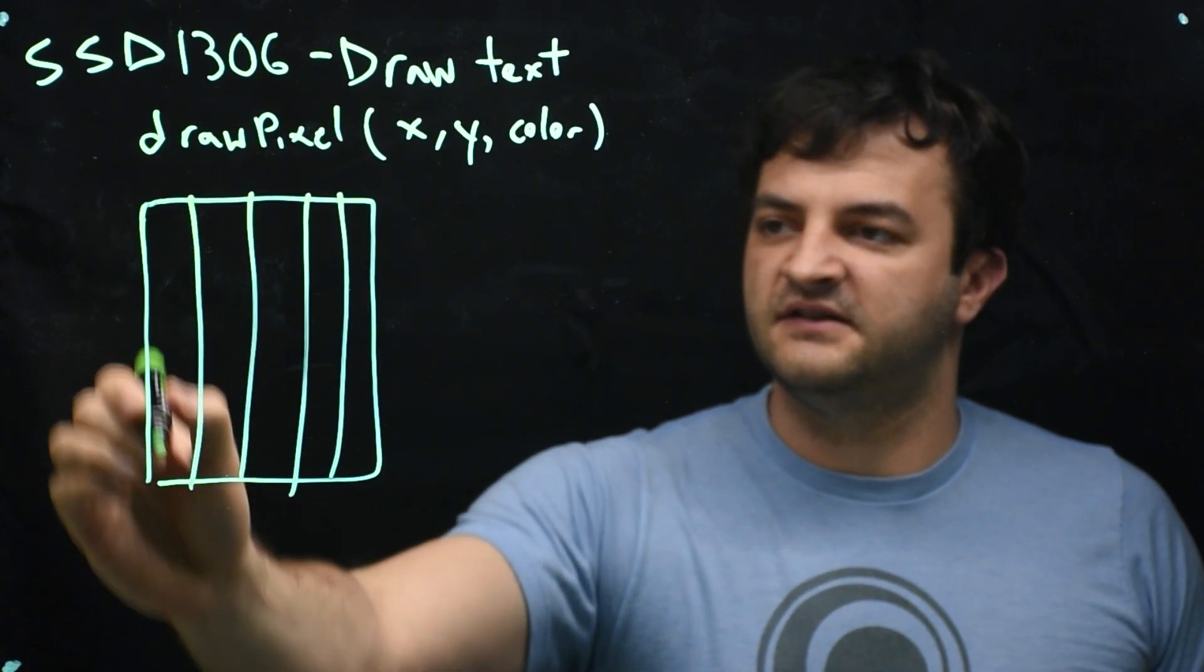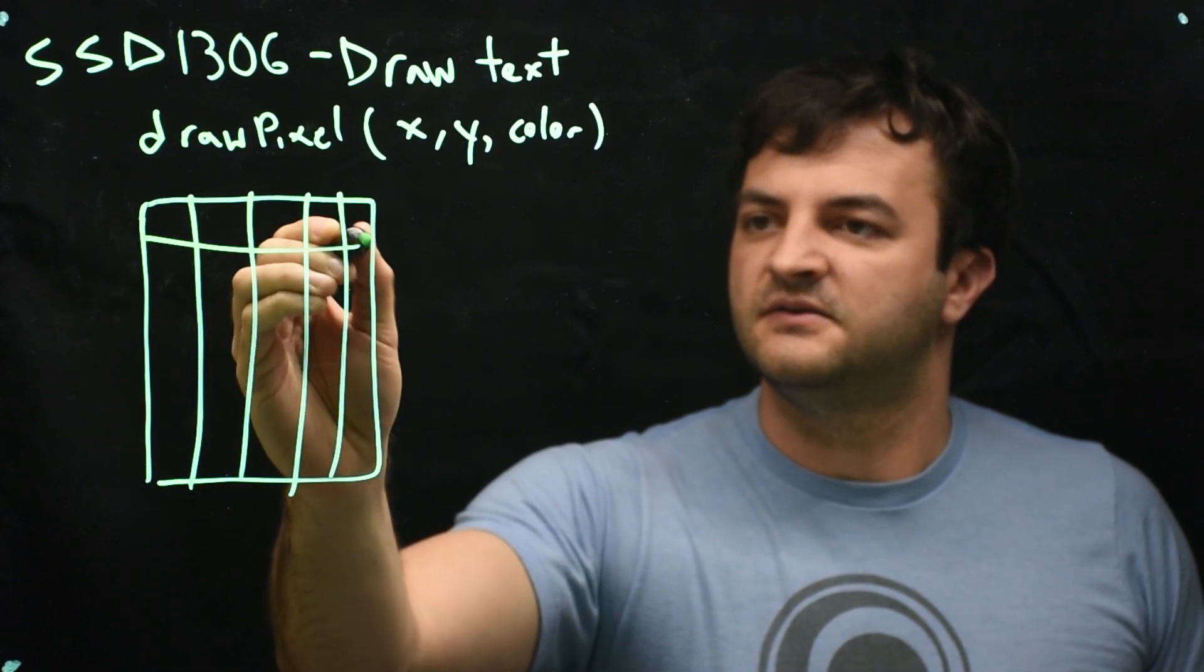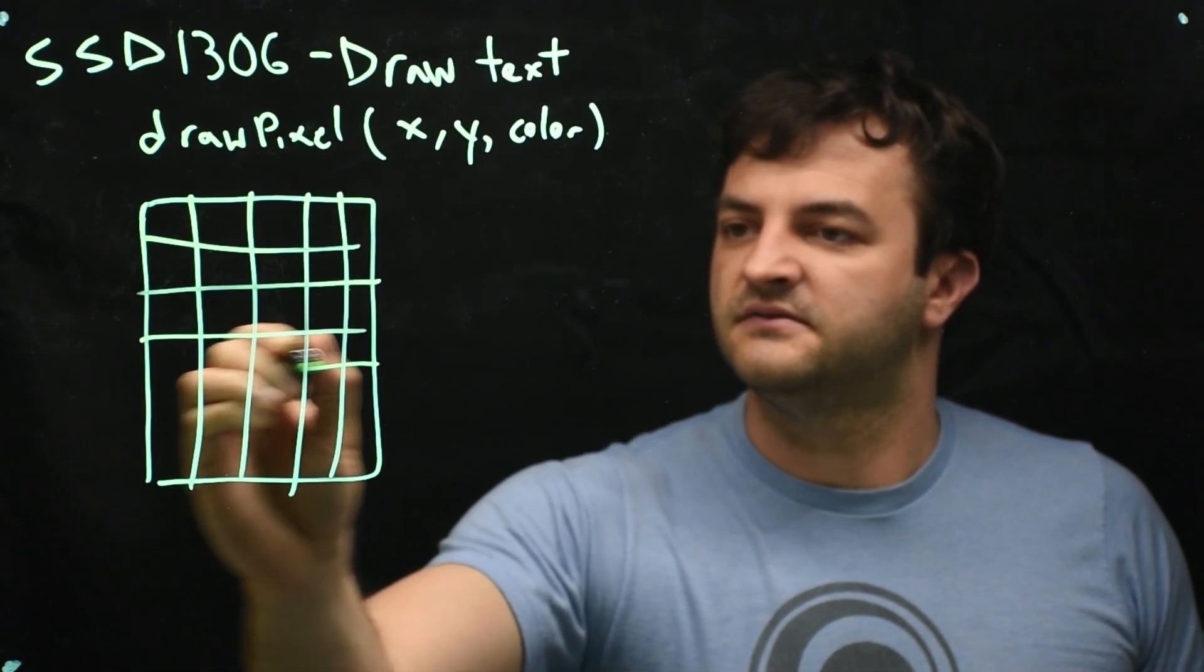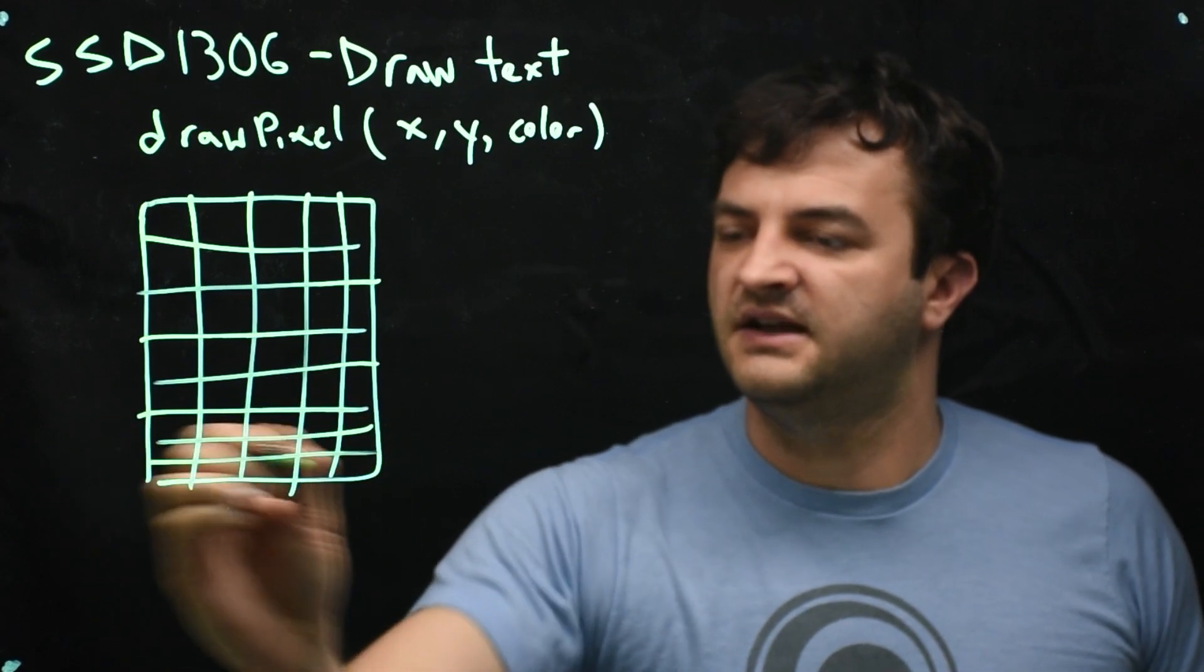So each of these is a byte, and every byte of course is made of eight bits. 1, 2, 3, 4, 5, 6, 7, 8.